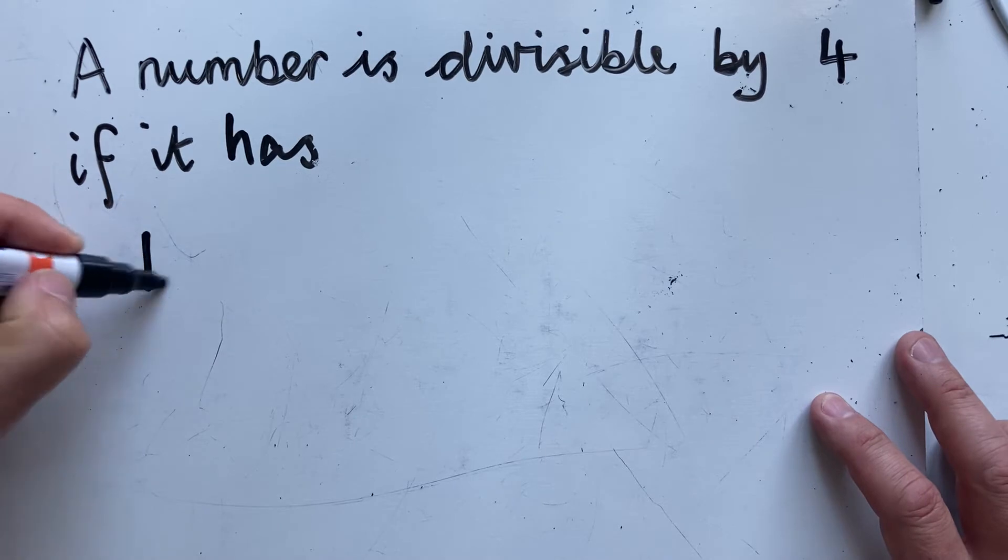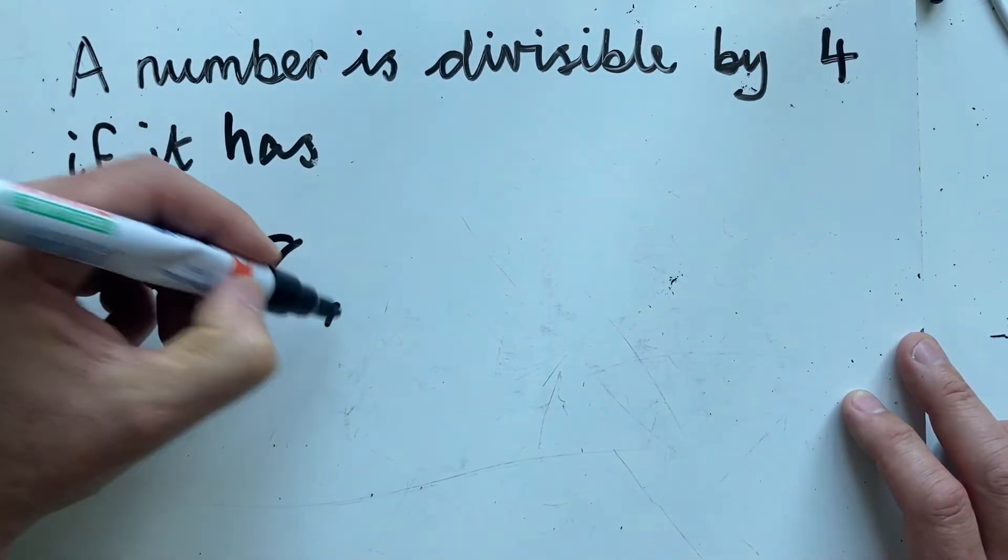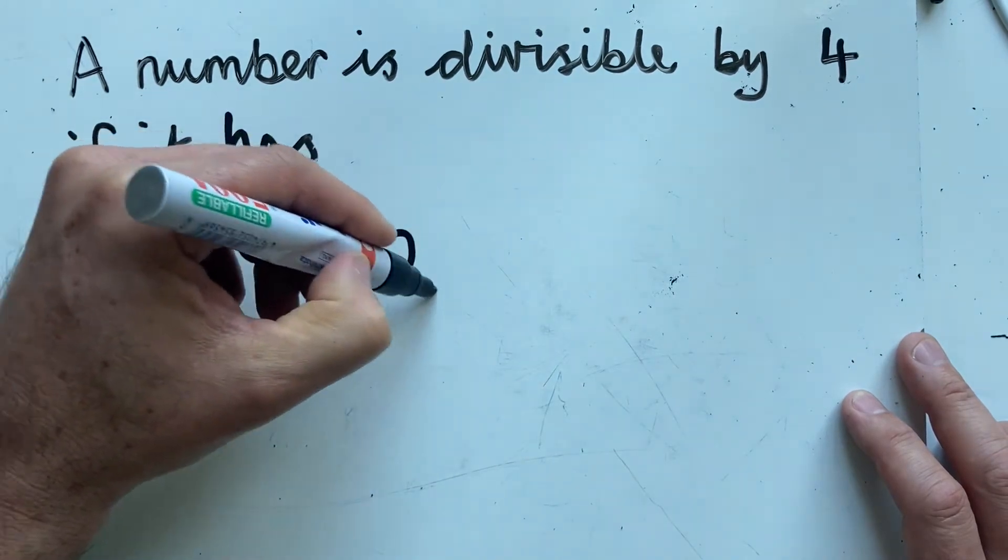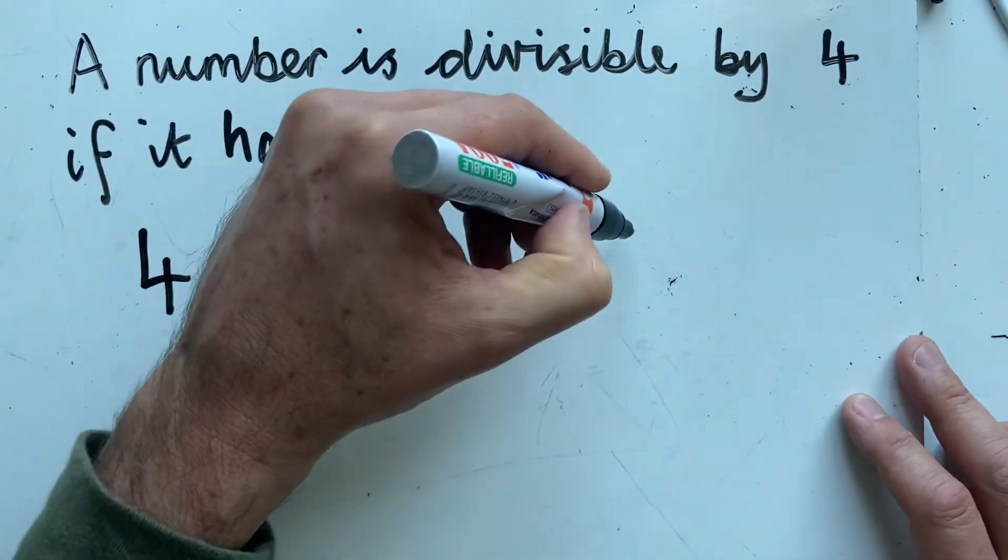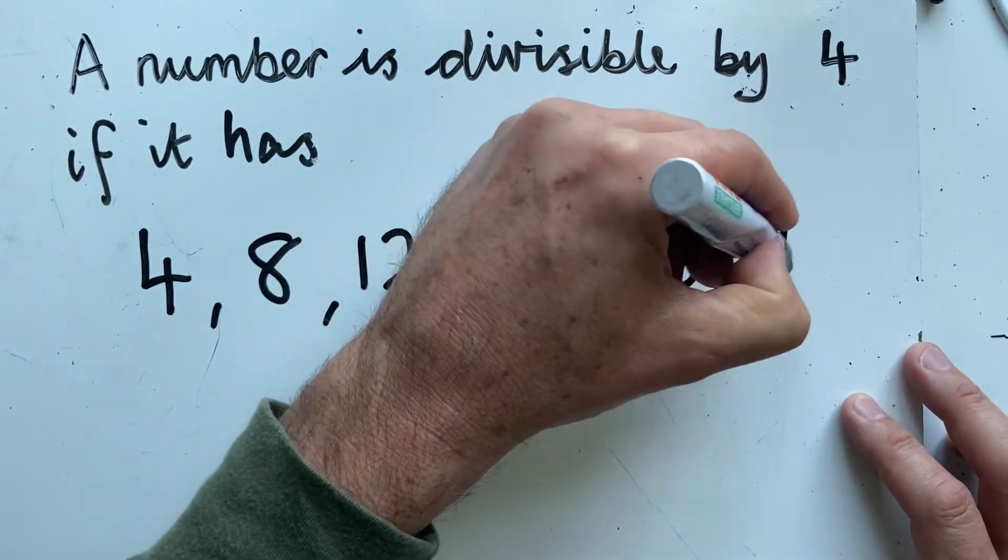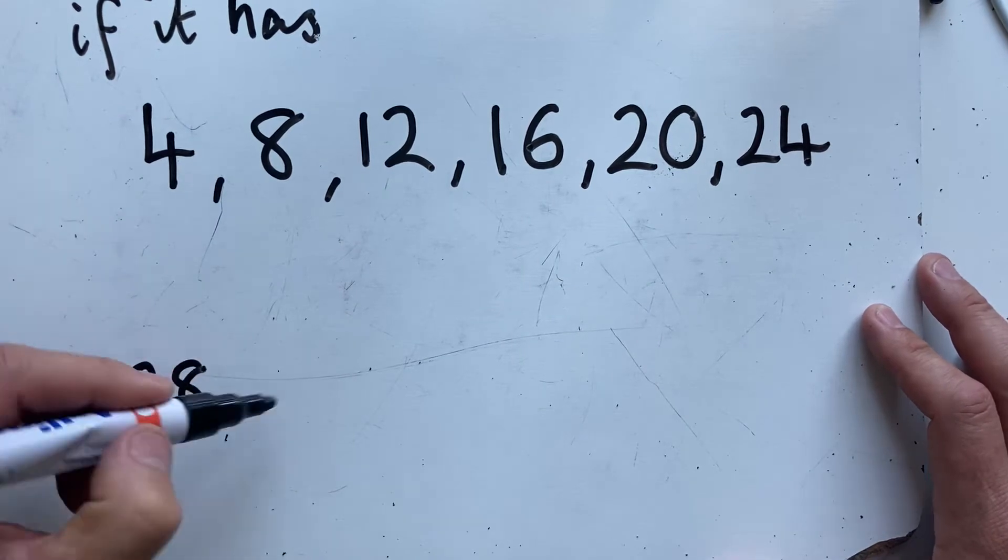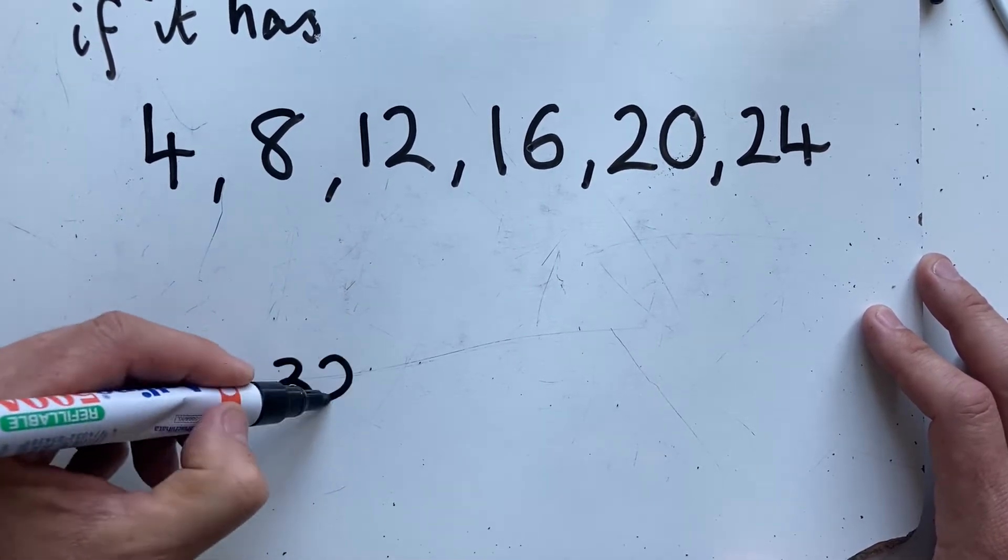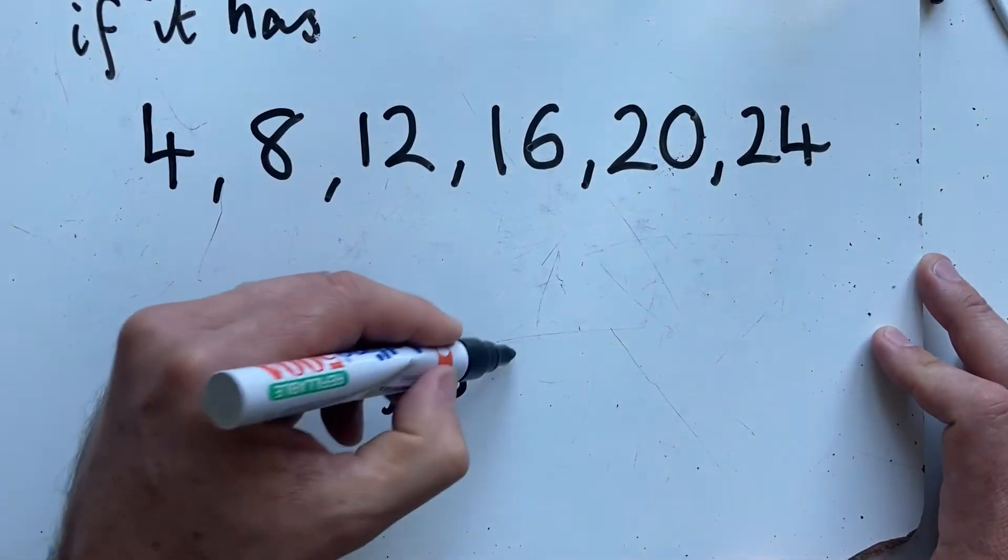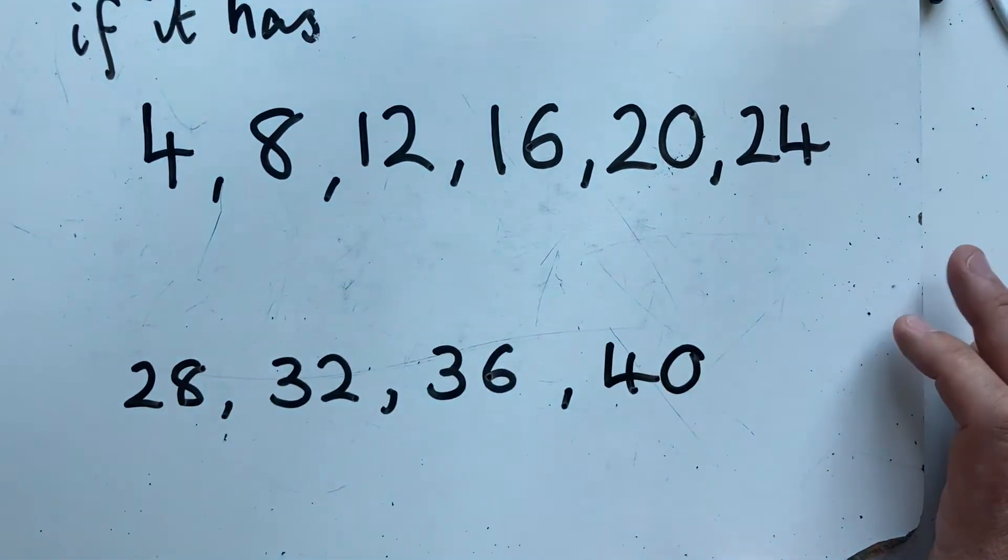So the multiples of 4 are 4, 8, 12, 16, 20, 24, 28, 32, 36 and 40. They're the first 10.